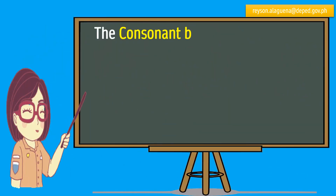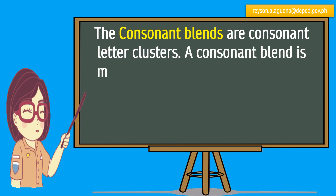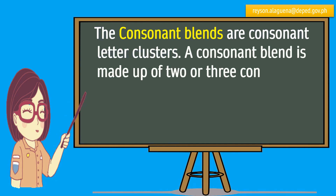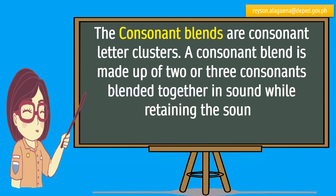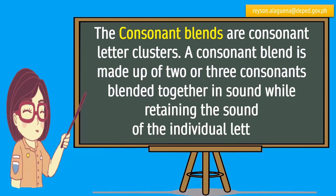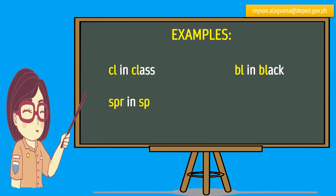The consonant blends are consonant-letter clusters. A consonant blend is made up of two or three consonants blended together in sound while retaining the sound of the individual letters. Examples: CL in class, BL in black, SPR in spray, ST in fast, ND in band.